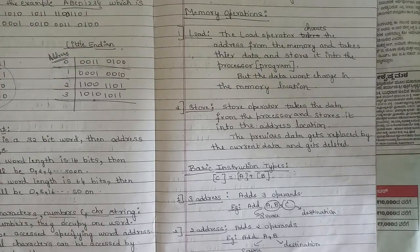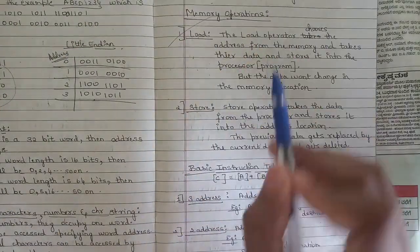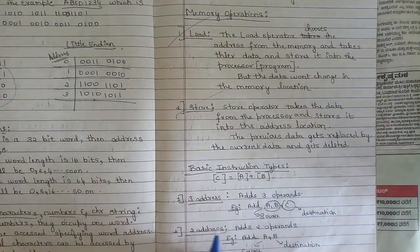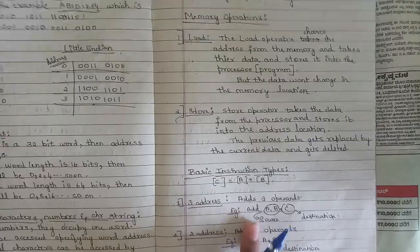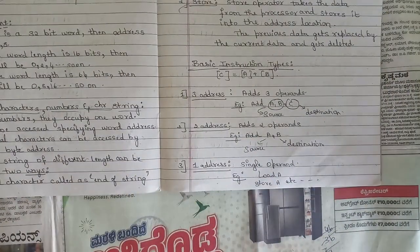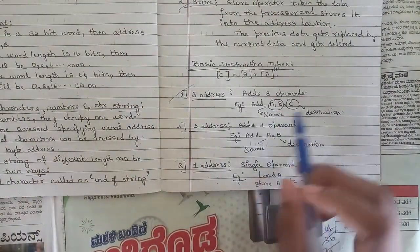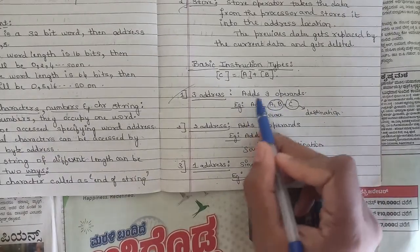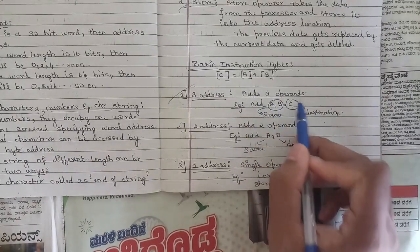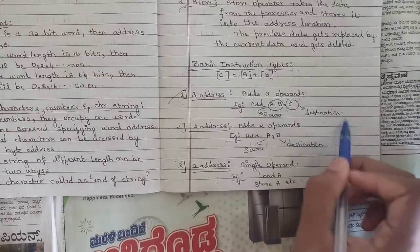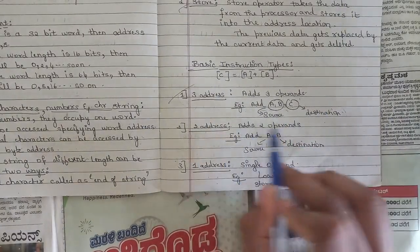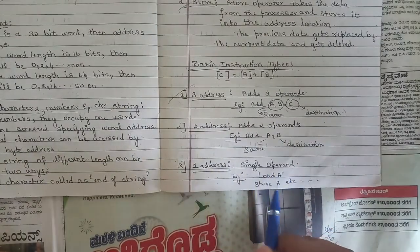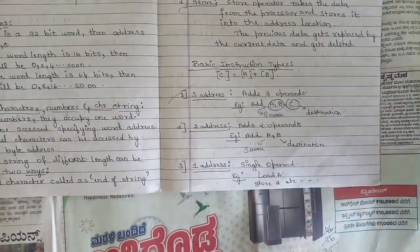One more important question is about different kinds of memory operations — the load operation and the store operation. Please pause the video and refer to that. Also, basic instruction types include: three-address instruction, which uses three operands (e.g., ADD A, B, C where B and C are sources and A is destination); two-address instruction with two operands; and one-address instruction with a single operand.